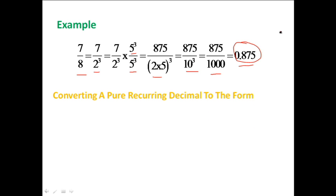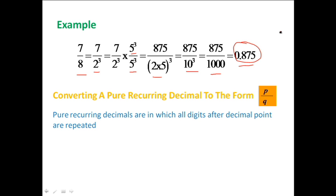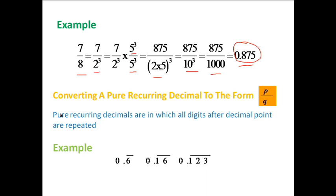Now let's look at how to convert a pure recurring decimal to the form p/q. Pure recurring decimals are those in which all digits after the decimal point are repeated — for example, 0.6̄ where 6 repeats, or 0.1̄6̄, or 0.1̄2̄3̄. Let's see how to convert these pure recurring decimals into fractions.